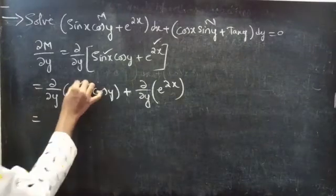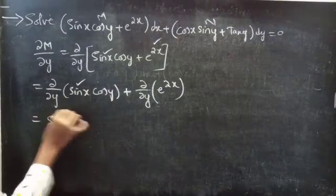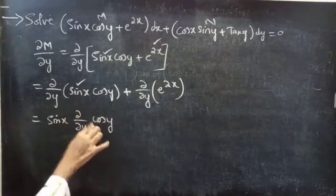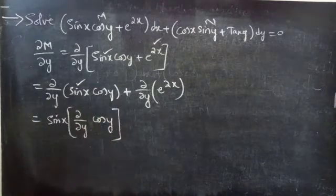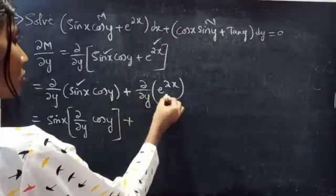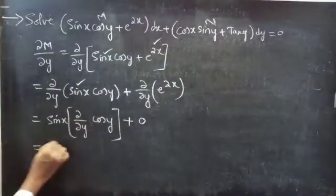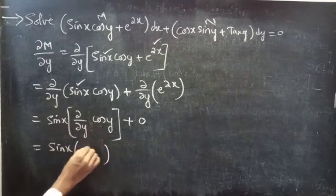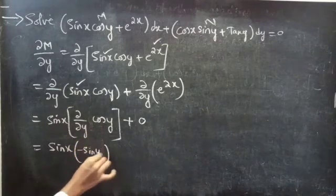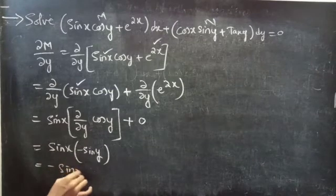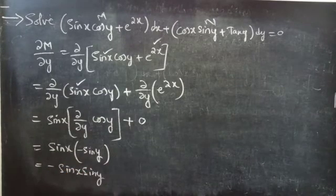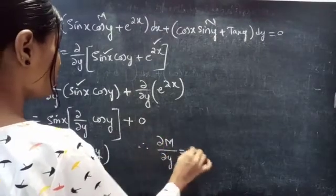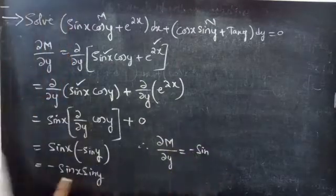Since we are doing partial derivative with respect to y, we treat x as constant. The function containing x, sin x, is constant, and e power 2x is also a constant. This equals sin x into derivative of cos y with respect to y, plus derivative of a constant with respect to y which is 0. The derivative of cos y is minus sin y, so ∂M/∂y equals minus sin x into sin y.